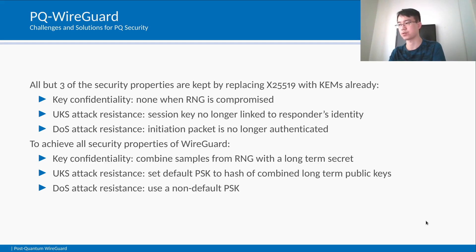Here we take another approach: we set the default pre-shared key to the hash value of the concatenated long-term public keys of Alice and Bob. This way, we also ensure that the final session keys are linked to the identities. For DoS mitigation, the initiation message cannot be authenticated without a replacement of the Diffie-Hellman results of the long-term key pairs, but users who wish to achieve the same level of DoS mitigation as WireGuard can use a pre-shared key. With those adjustments, PQ WireGuard retains all security properties of WireGuard.